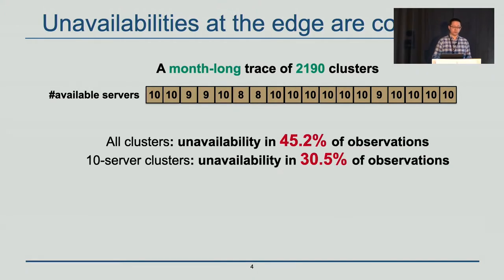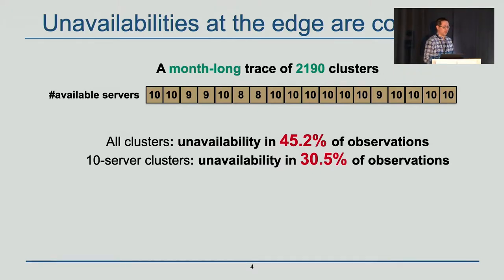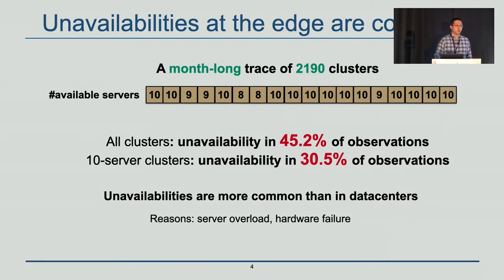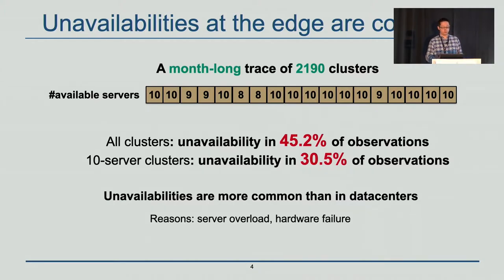The trace shows the number of available servers at each five-minute window over the month-long period for each cluster. We observe that among all clusters, unavailability shows up in over 45% of observations. And among 10-server clusters, which is a typical size at the edge, unavailability shows up in over 30% of observations. This is far more common than traditional data centers.